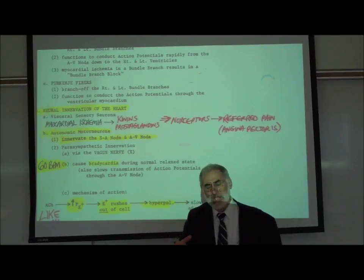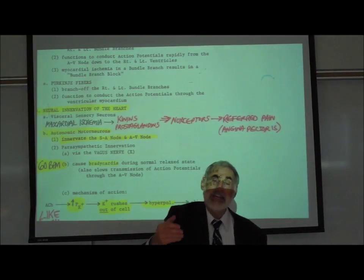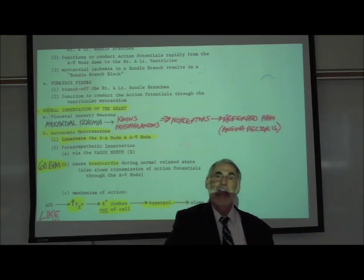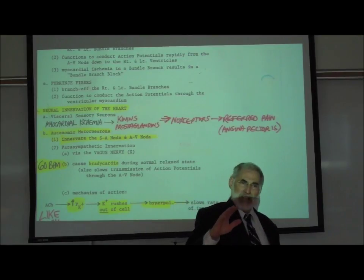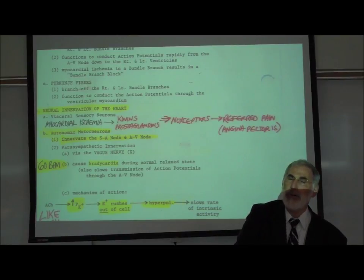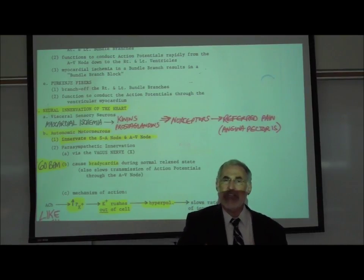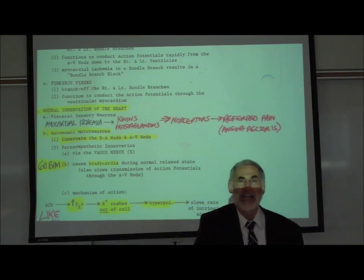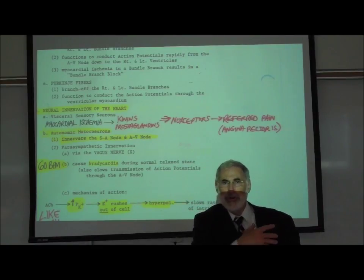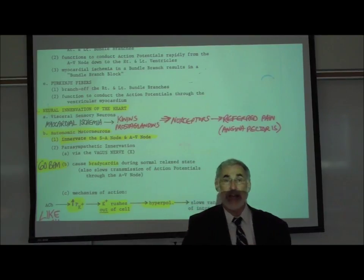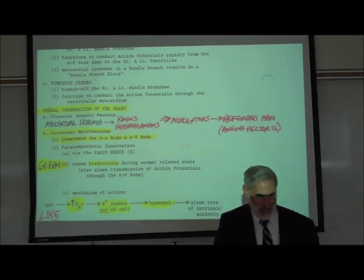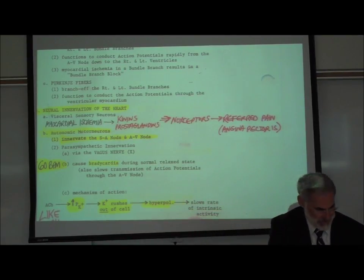This information about pain is then sent from the heart up to the brain. Interestingly, the pain that originates from the heart is not perceived as coming from the heart. It is perceived as coming from the left shoulder, radiating down the medial side of the left arm. This is called referred pain, which we've talked about previously.